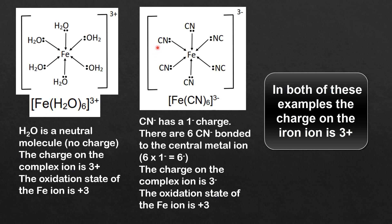In the next example we have cyanide ions as ligands. The cyanide ion has a 1 negative charge. There are 6 cyanide ions bonded to the central metal ion.